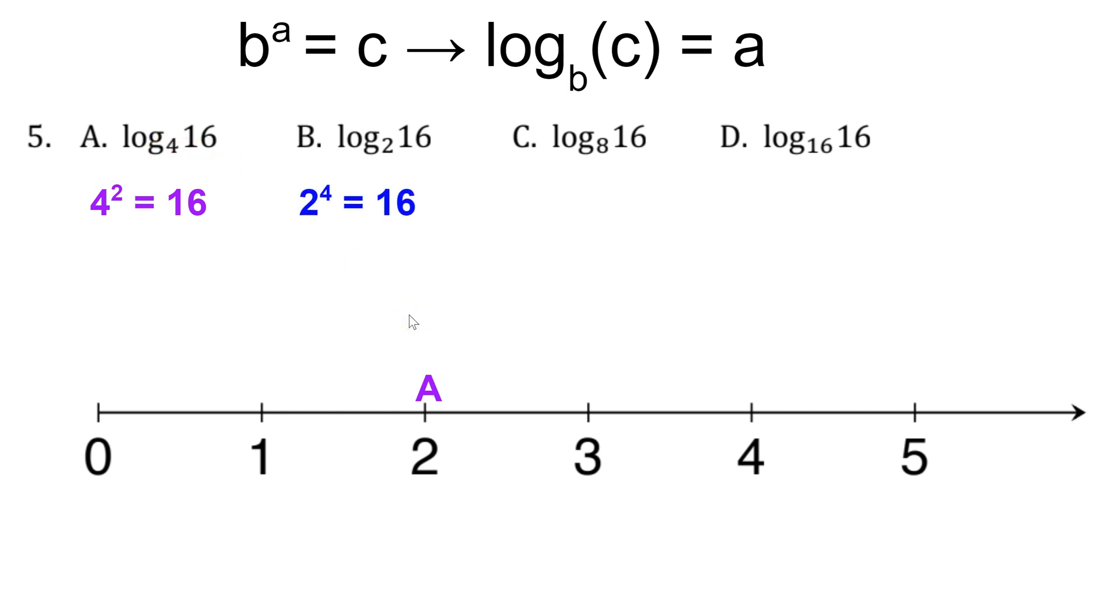We know that 2 to the fourth power is 16, which tells us that point b should be located at 4. The value of that expression is 4. C is a little more difficult. Using some trial and error, we could find that 8 to the 4 thirds power is 16. So that's 1.3 repeating. Might fit well there on the number line just slightly left of halfway between 1 and 2. And 16 to the first power is 16. So point d fits most appropriately right there at 1.